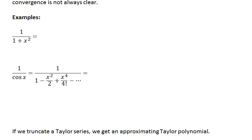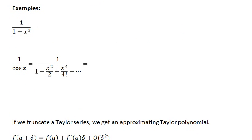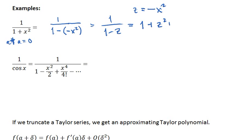For example, if I wanted to find the series expansion of 1 over 1 plus x squared at a equals zero, well that looks like a geometric series if we rewrite it this way. We can look at this as 1 over 1 minus z, where z is equal to negative x squared. Therefore we can use the geometric series expression.